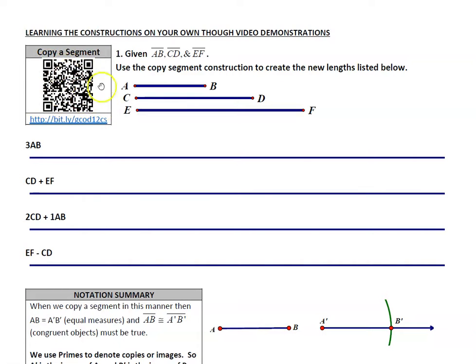So if you QR code in, you point your camera at this, or if you type this in, it'll go to a video, and it will show you how to do something called copying a segment. And then you will use that skill to basically create these four answers.